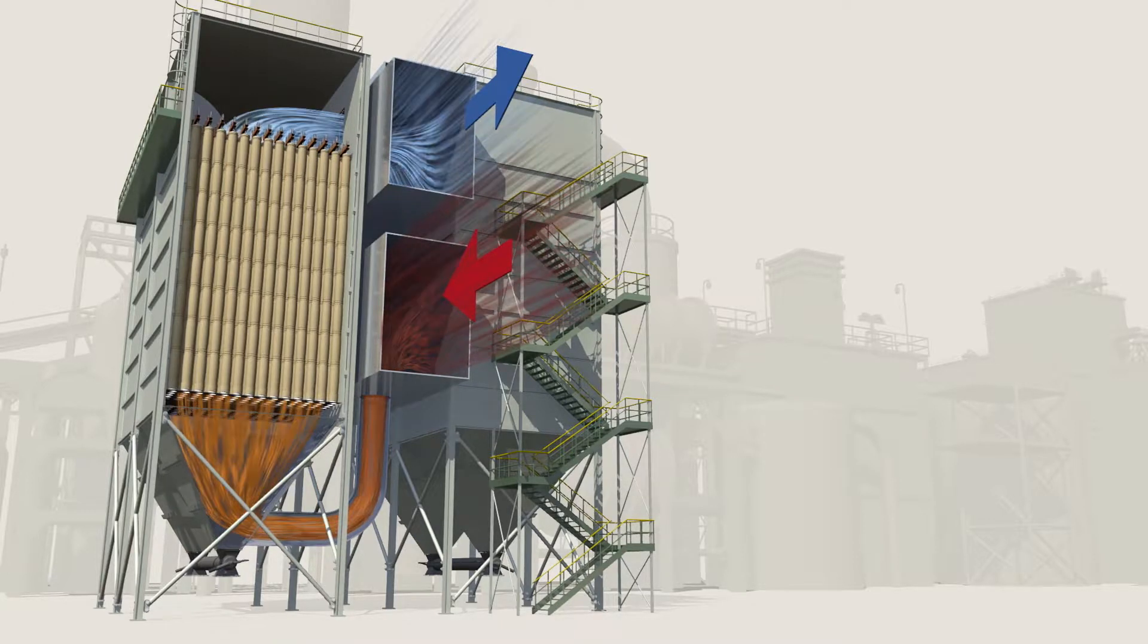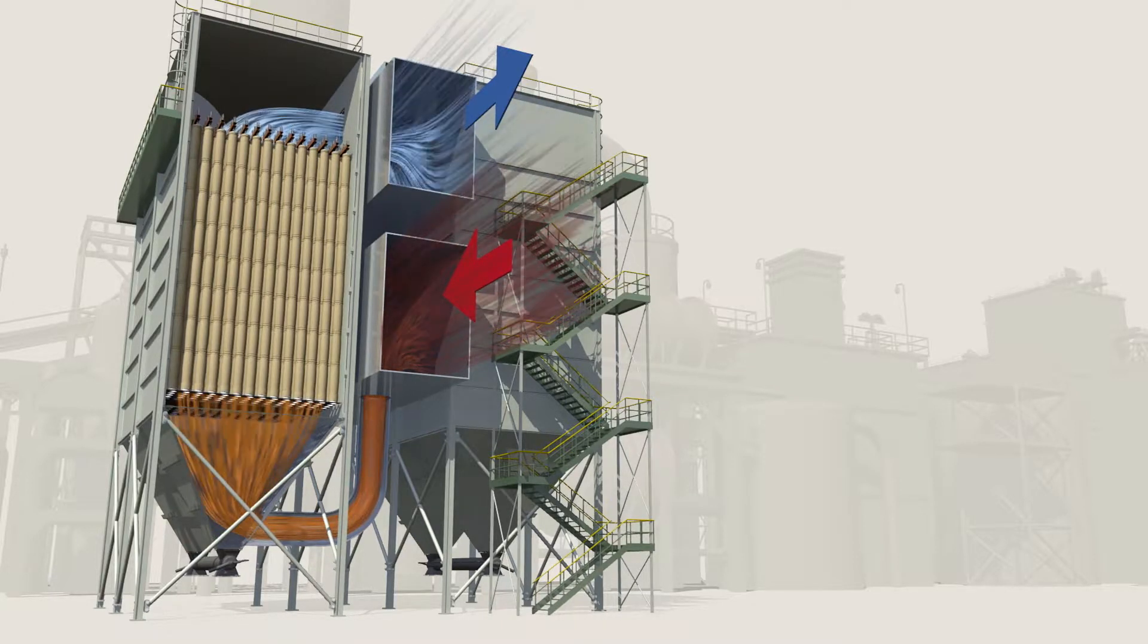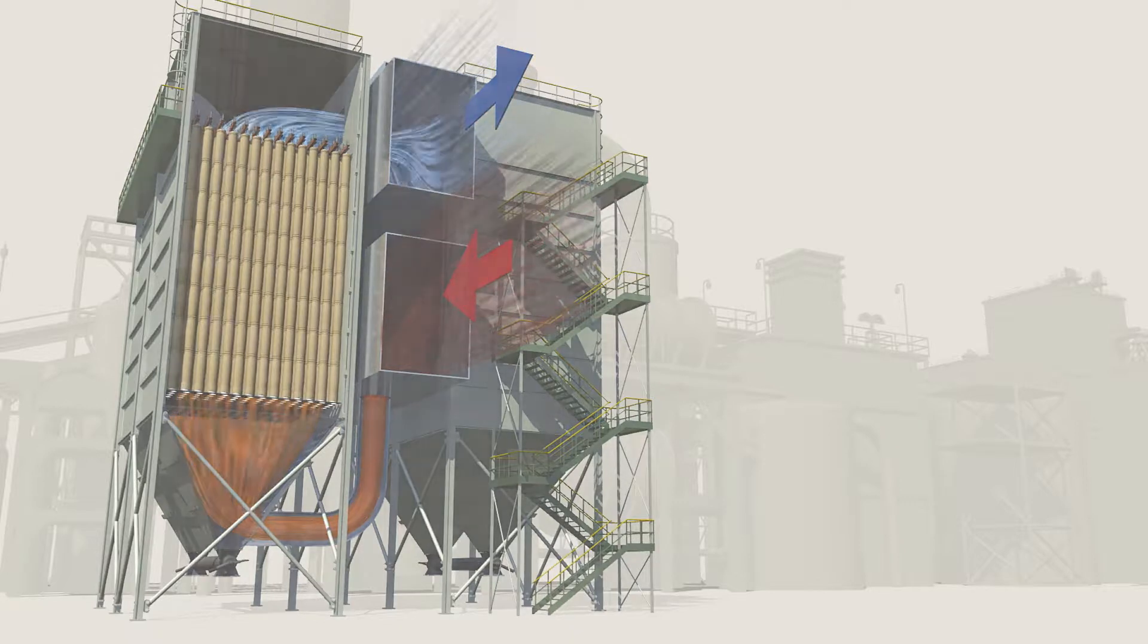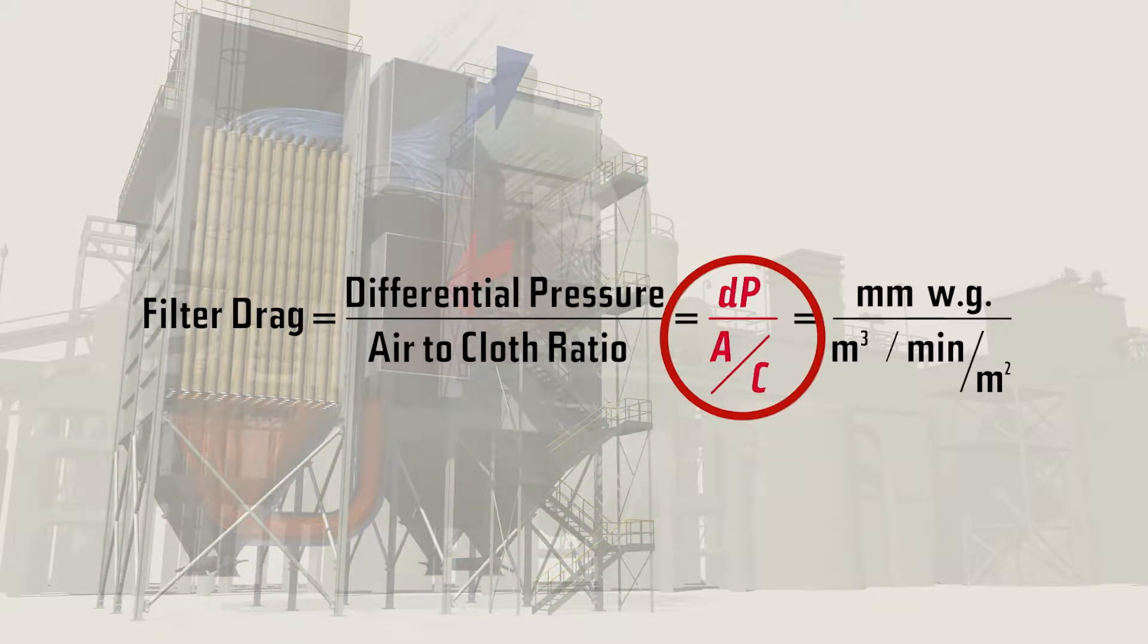The higher the resistance, the more energy consumed to move the air through the baghouse. This formula breaks it down: filter drag equals differential pressure divided by air to cloth ratio.